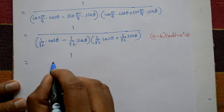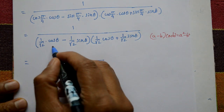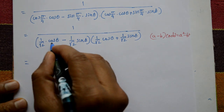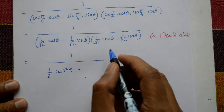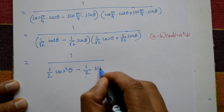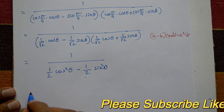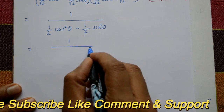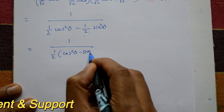So a² = (1/√2)²·cos²θ = (1/2)·cos²θ, and b² = (1/√2)²·sin²θ = (1/2)·sin²θ. This gives 1 upon (1/2)(cos²θ − sin²θ). Taking 1/2 outside in the denominator, we get 2 upon (cos²θ − sin²θ).